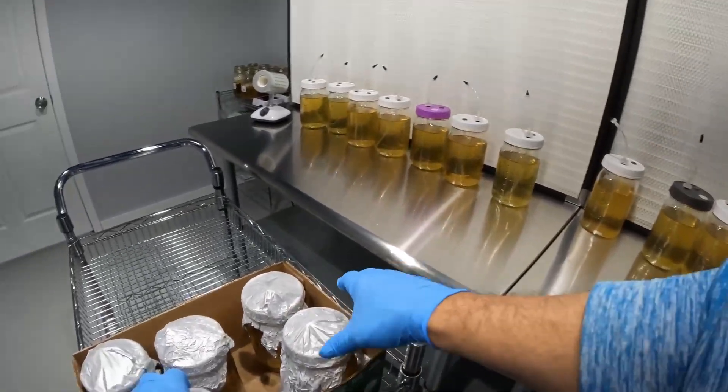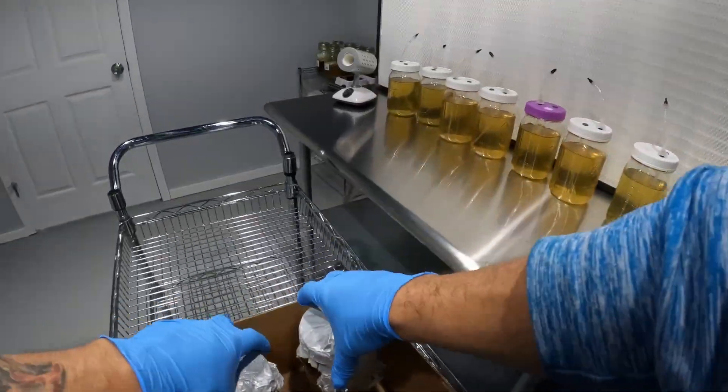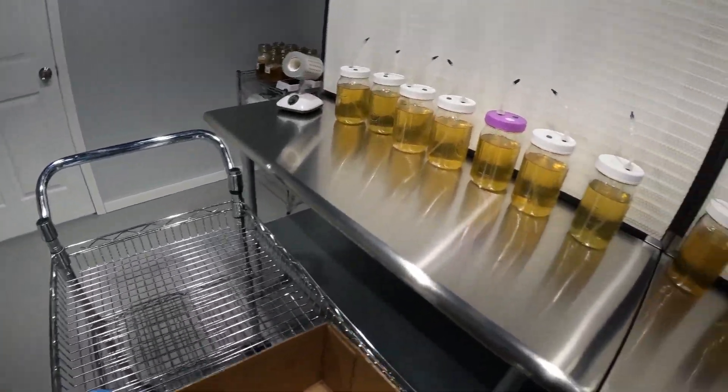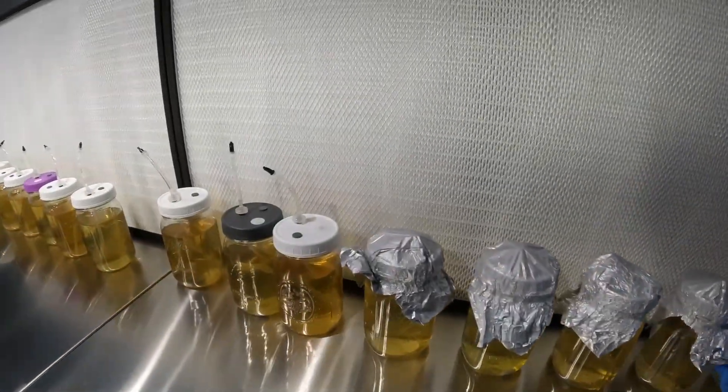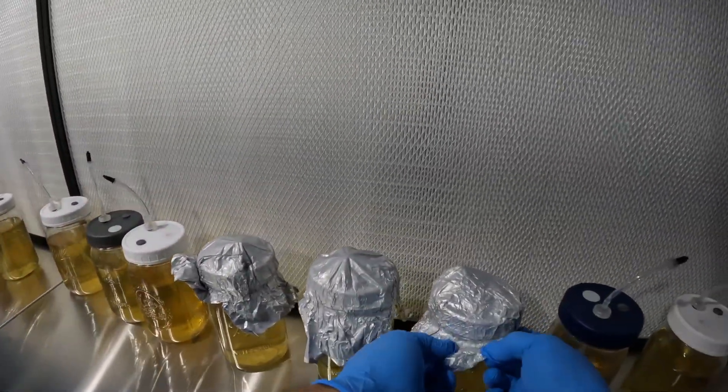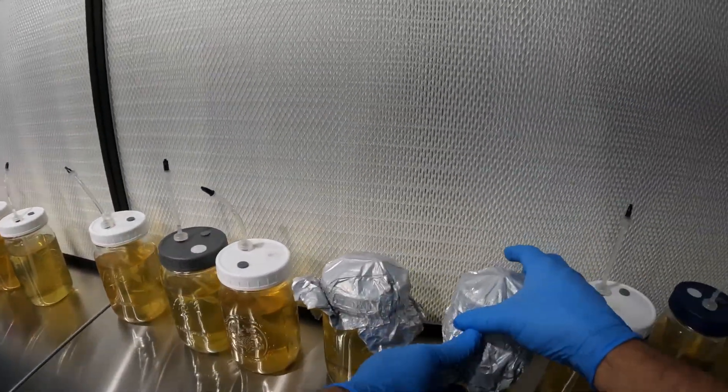I maintain them covered with the foil as much as I can, all the way to when I'm bringing them into the clean room. And then once we have them in front of the flow hood, then we remove that and then they can cool down. And typically I just leave them for about 24 hours before we do anything.